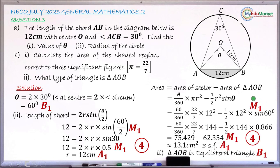For question B, substituting the formula for area of the shaded segment — area of sector minus area of triangle — with correct theta and radius earns 1 method mark. Simplifying correctly earns another method mark. Getting the area as 13.1 cm² (rounded to 3 significant figures) earns 1 accuracy mark, and identifying the triangle as equilateral earns 1 bonus mark. Question B also has 4 marks total.